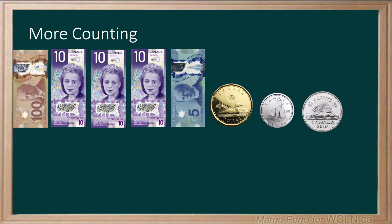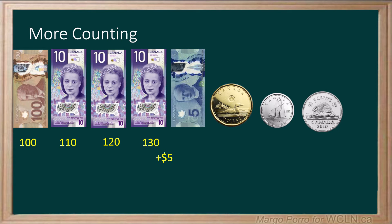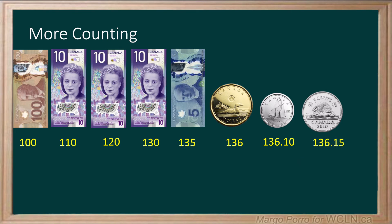Counting with bills follows the same process. Starting with the largest bill, in this case it is a 100 dollar bill. We will add ten dollars to get to 110 dollars, add another 10 to 120, add another 10 to 130 dollars. Then we will add five dollars to get to 135 dollars. We will add our loonie to get to 136 dollars. Then we will start adding the cents: 10 cents takes us to 136 dollars and 10 cents, and five cents more takes us to 136 dollars and 15 cents.